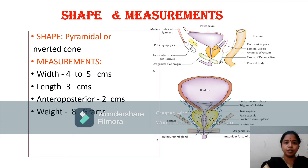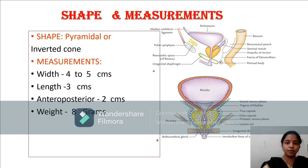Shape and measurements of the prostate gland: it is inverted cone or pyramidal in shape. The width is about 4 to 5 cm, length is about 3 cm, anteroposterior diameter is 2 cm, and weight is about 8 grams. In the body, few structures have more width than length — one of them is the prostate, and the others are the pons and cecum.